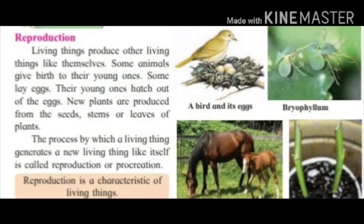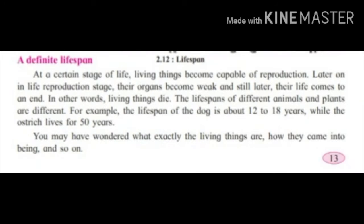Another characteristic is reproduction. Living things produce other living things like themselves. Some animals give birth to their young ones, while some lay eggs and their young ones hatch out. New plants are produced from the seeds, stems, or leaves of plants. The process by which a living thing generates a new living thing like itself is called reproduction or procreation.